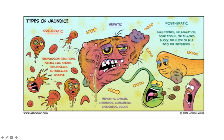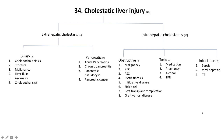Hepatic refers to some process in the liver giving rise to jaundice. Here, you usually have a rise in your transaminases — alanine aminotransferase (ALT) and aspartate aminotransferase (AST) — and we speak to hepatitis, cancer, cirrhosis, congenital disorders, and drugs. Post-hepatic has to do with the biliary ductal system outside the liver; here we have a rise in ductal enzymes — alkaline phosphatase, gamma-glutamyl transferase, five-prime nucleotidase — and direct bilirubin will be high. Causes include gallstones, inflammation, scar tissue, or tumors blocking bile flow into the intestine.